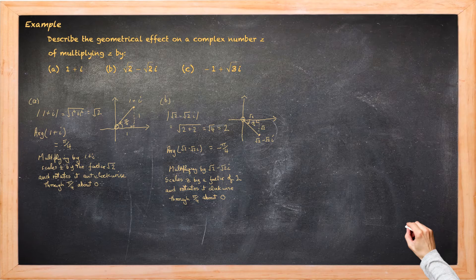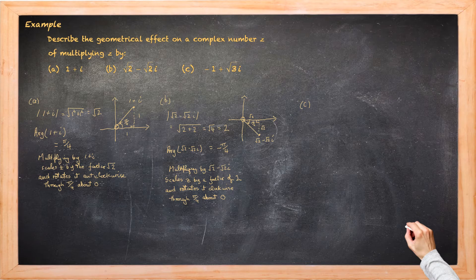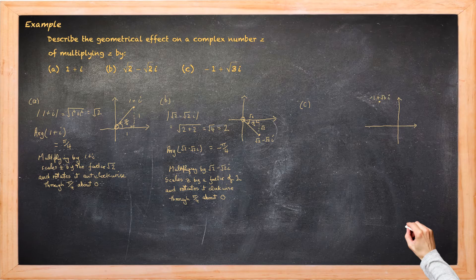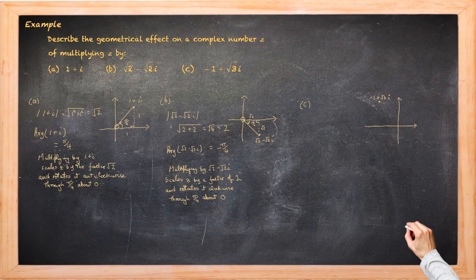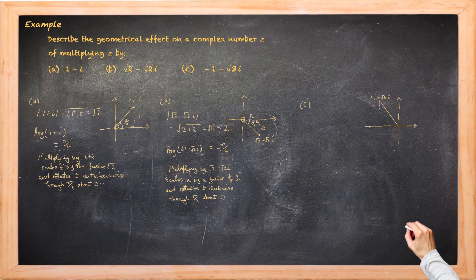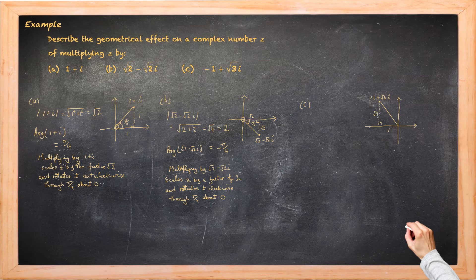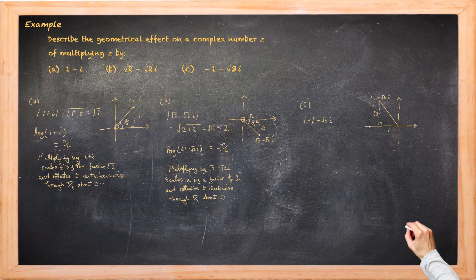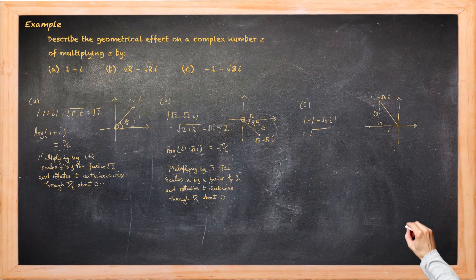So finally let's have a look at part c. In part c we're investigating negative 1 plus root 3i. And that'll be in the second quadrant. So a right angle triangle can be constructed. One of the sides is 1 and the second one is root 3. So the modulus of negative 1 plus root 3i will be the square root of negative 1 squared which is 1 plus root 3 squared which is 3. So again it's root 4 which is 2.